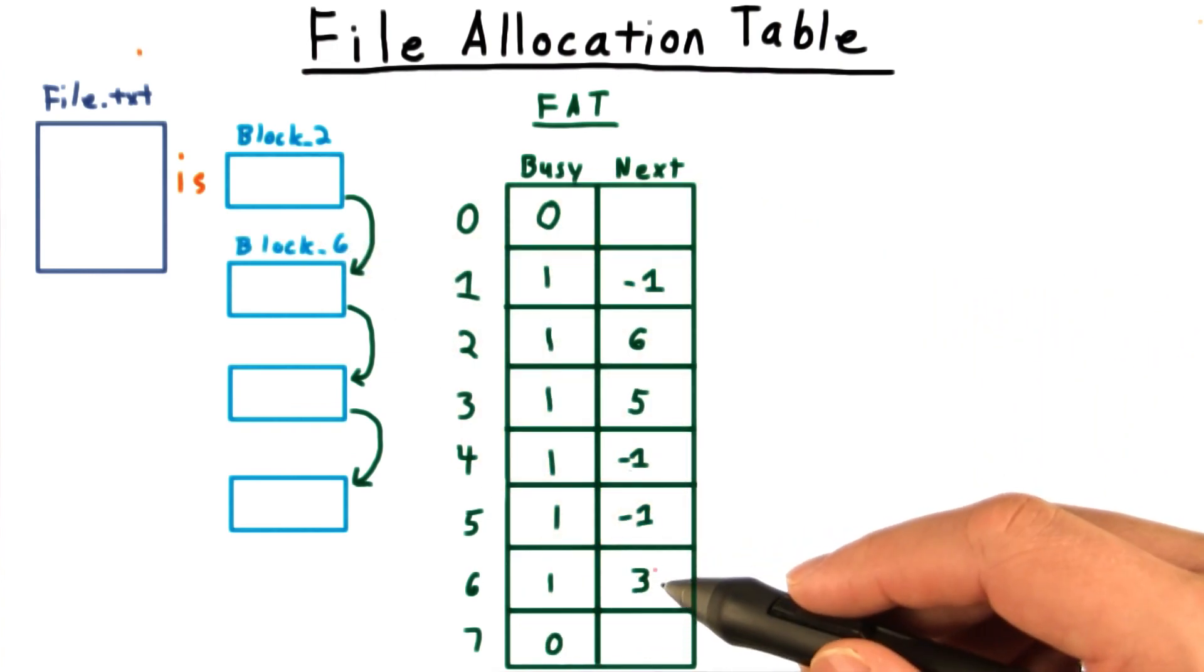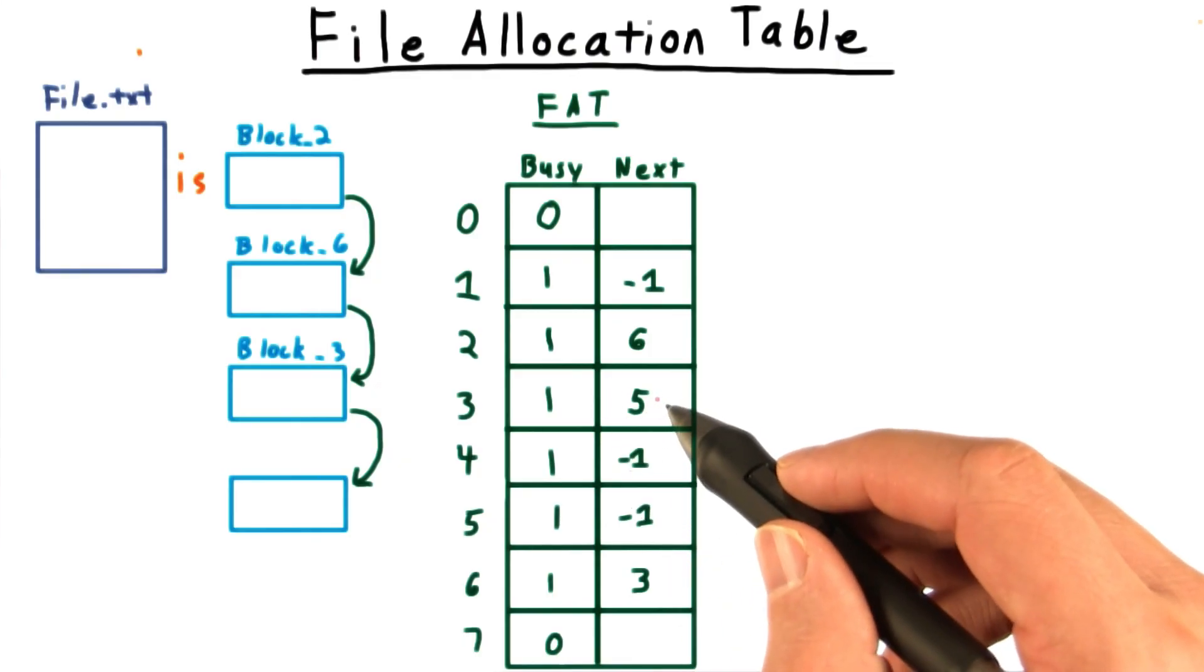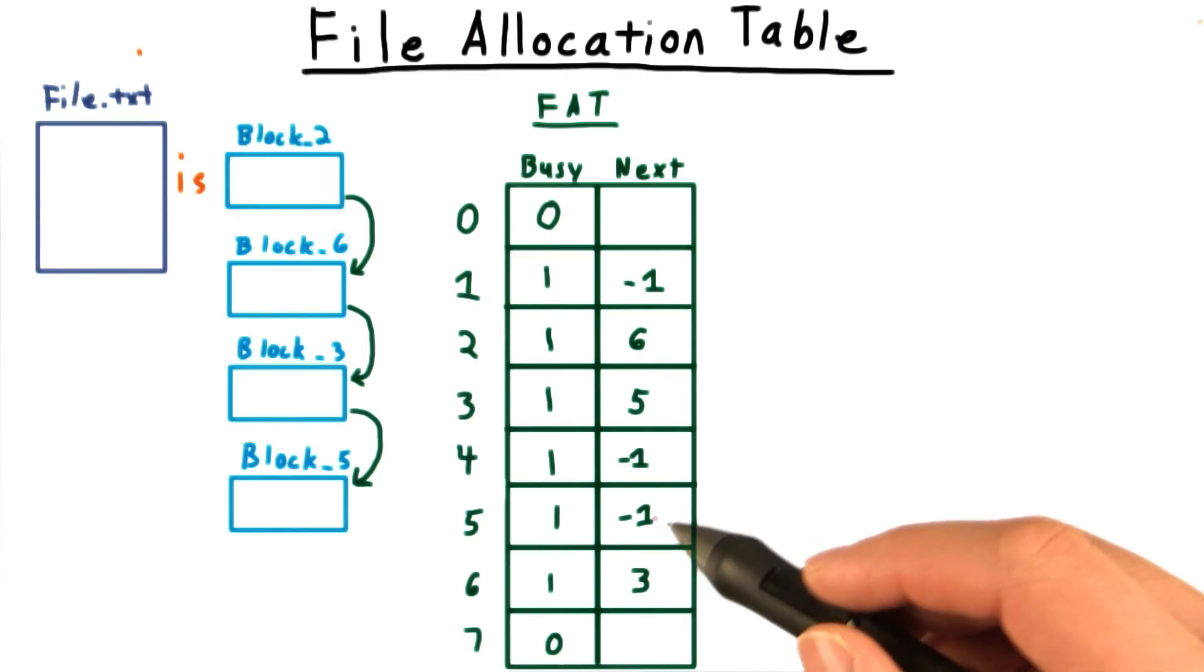Looking at 6 in the table, I see that the next block is 3. Again, going back to the table, I see that the next block is 5. And when I look at 5 in the table, I see that its next has the special value, indicating that we've reached the end of the file.